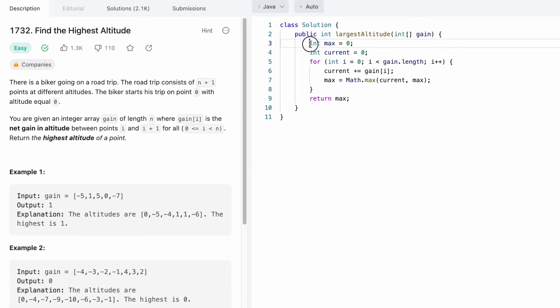We start with the max element which will be returned as the output, initially zero. Now we start at a current altitude of zero, which is not part of the gains array.